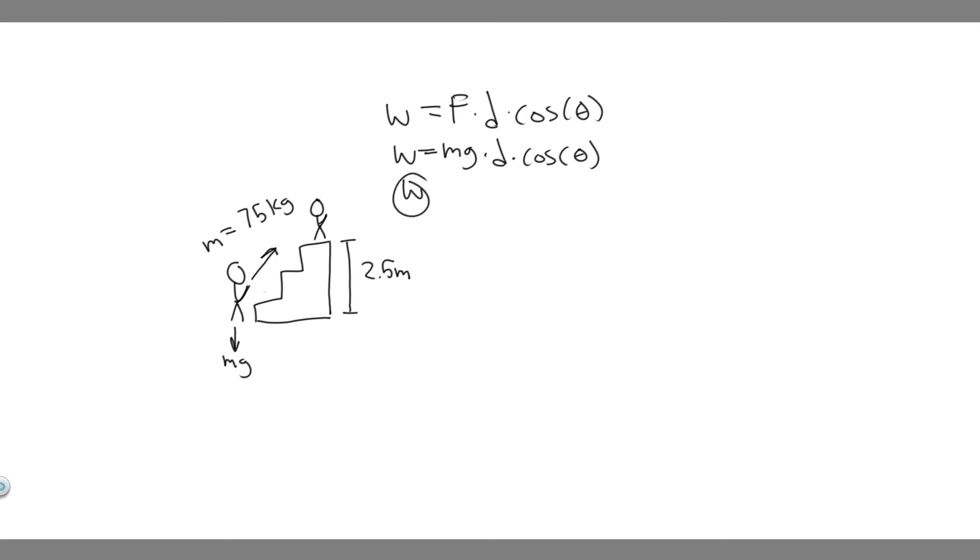And so the work is going to be equal to their mass, which in this case is 75, times g, which is just 9.8, times the distance they move. So in this case, we're talking about the y direction. So their distance is going to be 2.5 meters. They move upwards. And then times the cosine of theta.